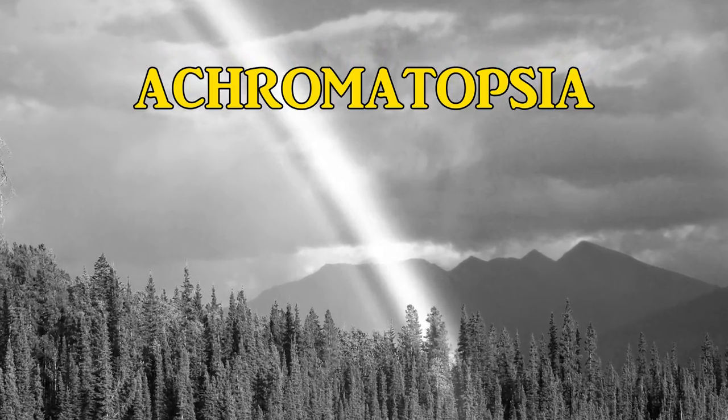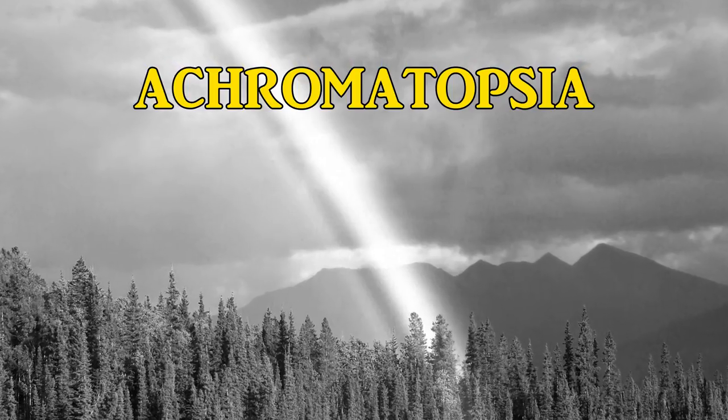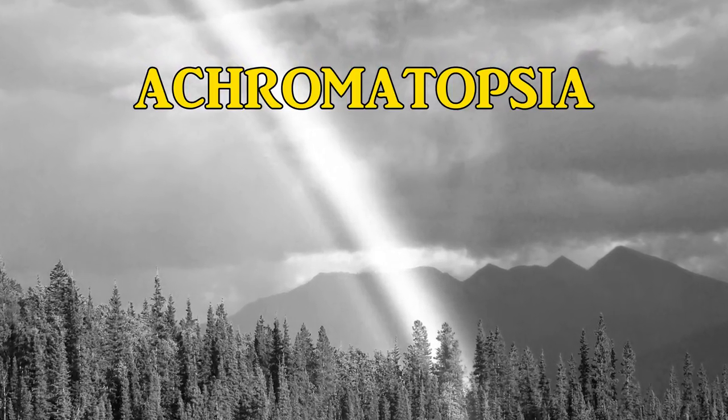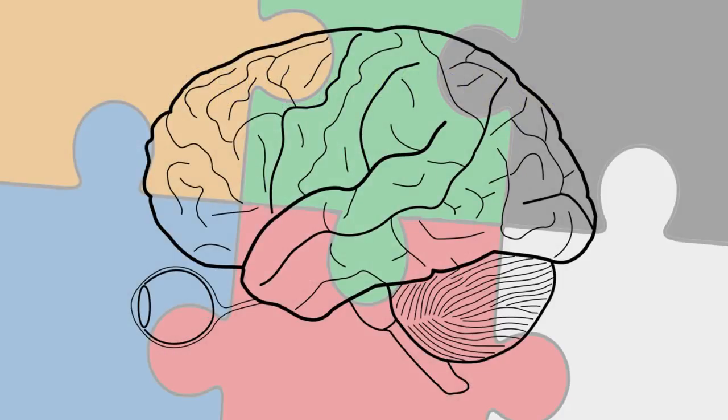Achromatopsia gets its name from A meaning without and chroma meaning color. Therefore people with achromatopsia live their lives without color. This can happen because of the eyes or because of the brain.